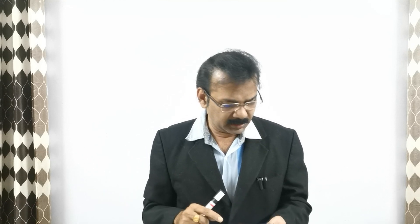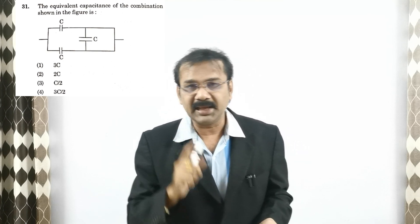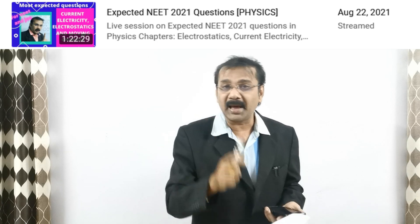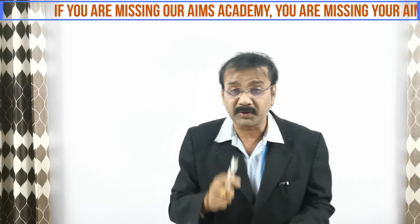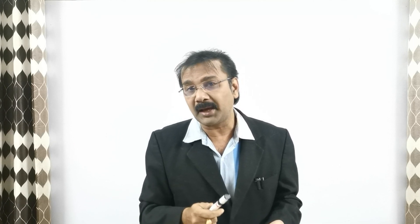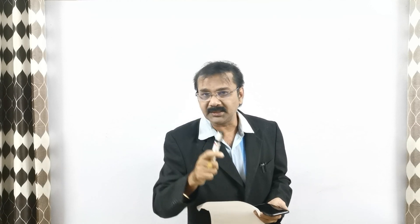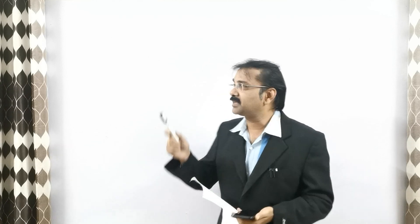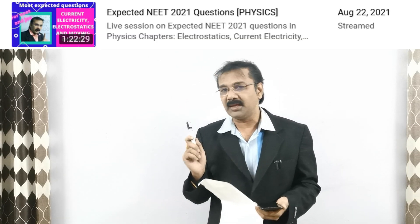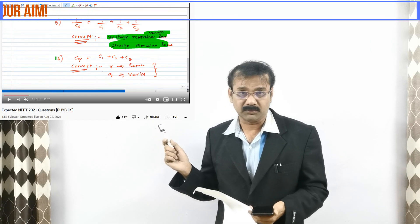Question number four — a figure has been given asking to find the equivalent capacitance of the combination. I have clearly given a live session on electrostatics covering all the formulas for parallel and series capacitors. The formula for parallel combination is Cp = C1 + C2 + C3, and for series: 1/Cs = 1/C1 + 1/C2 + 1/C3. You can see the screen and the image displayed.